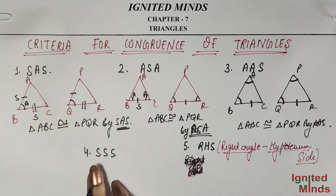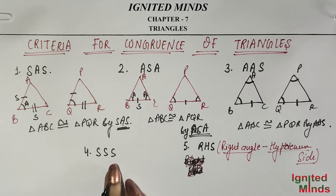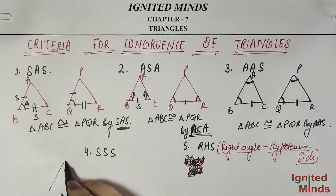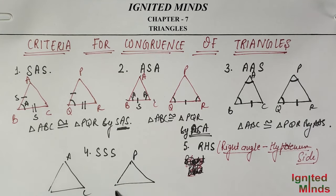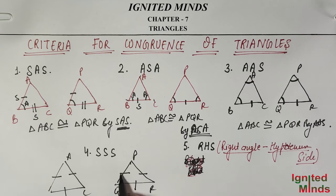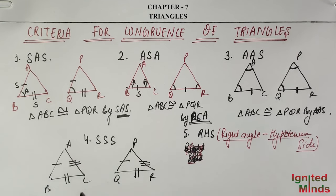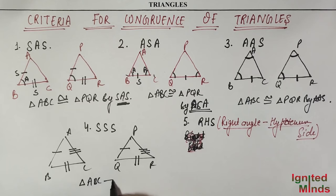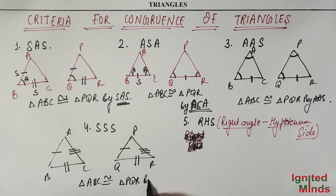Next, we have SSS — Side Side Side. In SSS, all three sides are equal. AB is equal to PQ, BC is equal to QR, and AC is equal to PR. So Triangle ABC is congruent to Triangle PQR by SSS.